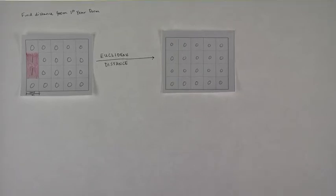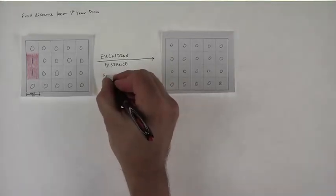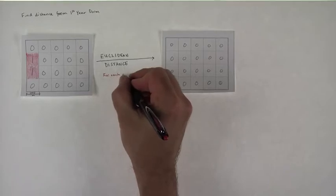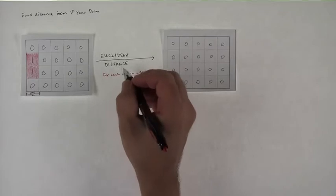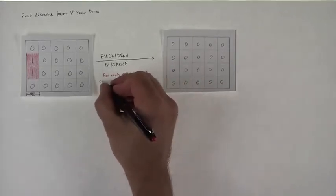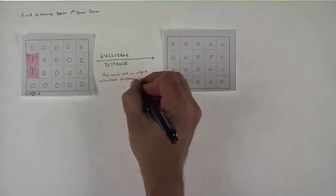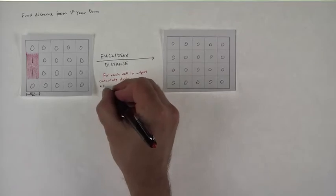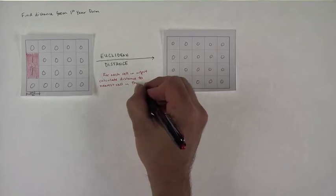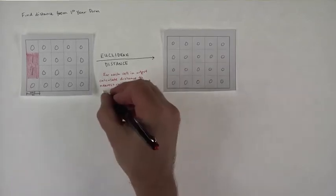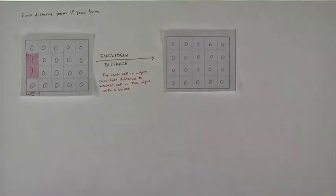And the reason is that what this tool does, for each cell in output, Euclidean Distance will calculate the distance to the nearest cell in the input with a value. And that is the rub.